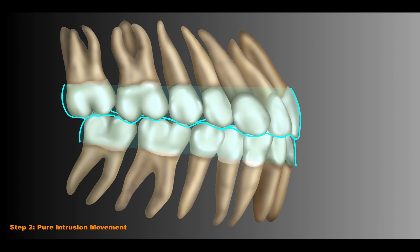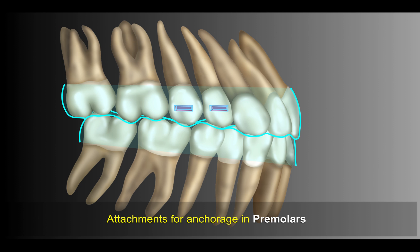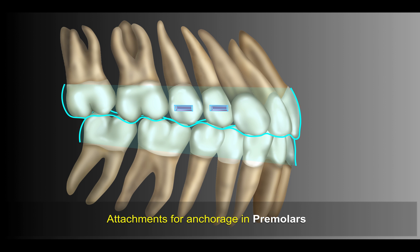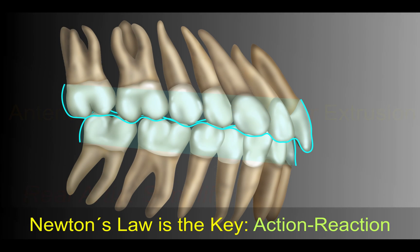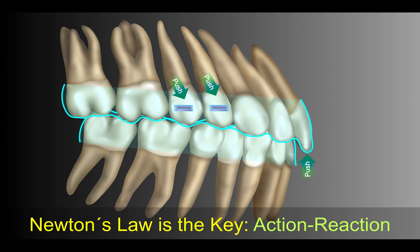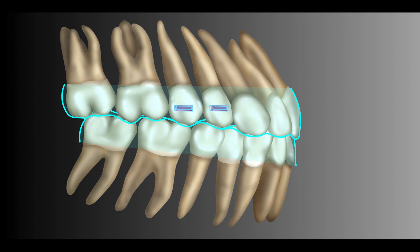Doing that, you can achieve the result that you want in the deep-bite. You also need to use the premolars for anchorage when we do this movement. And if you want to simplify even more and get even better results, think about Newton's law — action-reaction. Step one will be doing pure intrusion of incisors and also pure extrusion of premolars. Using the action-reaction law, we can get this result.